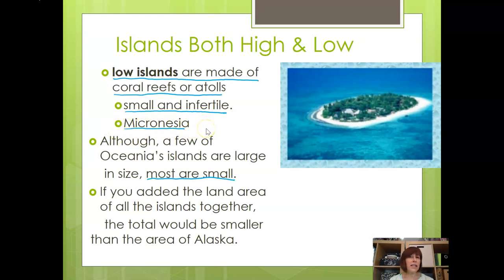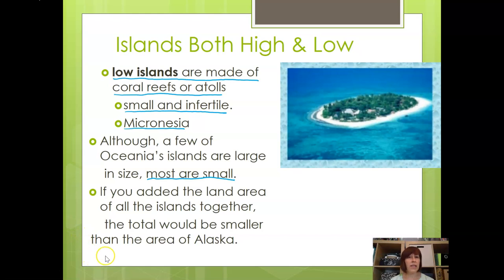Low islands are at risk of disappearing as waters rise because of climate change. Although a few of Oceania's islands are large, most are small. If you added all of the land area of these islands together, the total would be smaller than the area of Alaska — so it's relatively small territory even all together.